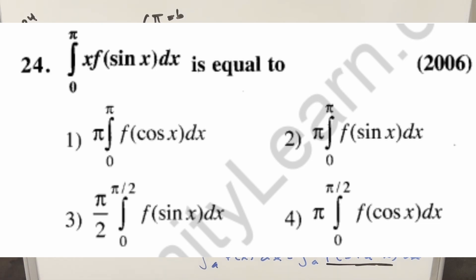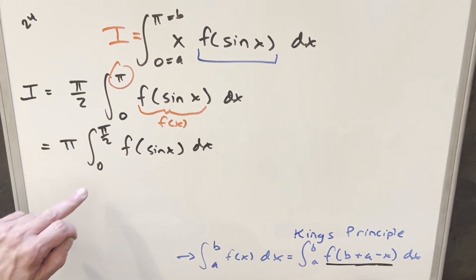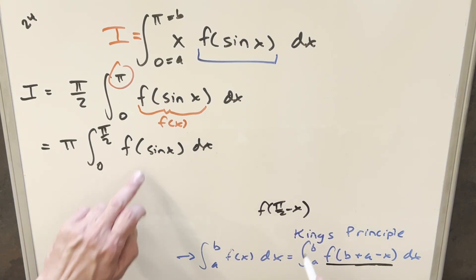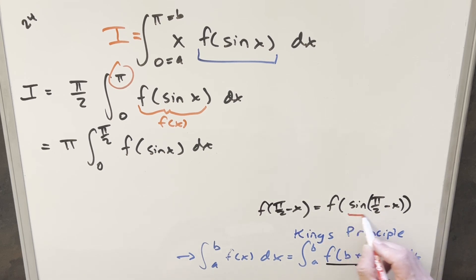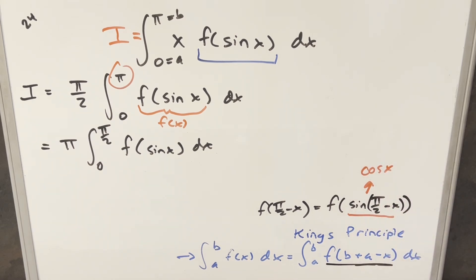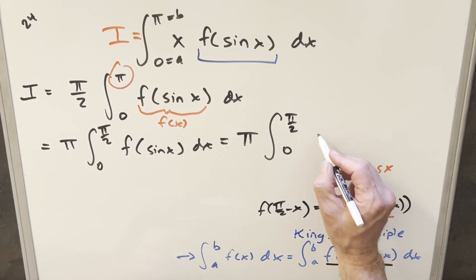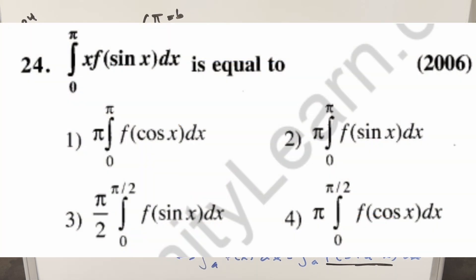This is still not one of our multiple choice options, so we go back to King's Principle again. The bounds are different now, so f of b plus a minus x gives us f of pi over 2 minus x. Plugging that in, we get f of sine of pi over 2 minus x, which by the complementary angle formula is f of cosine x. We still have pi out front and bounds from 0 to pi over 2, and this becomes f of cosine of x dx — which matches the fourth multiple choice option. The final solution is pi times the integral from 0 to pi over 2 of f of cosine x dx.